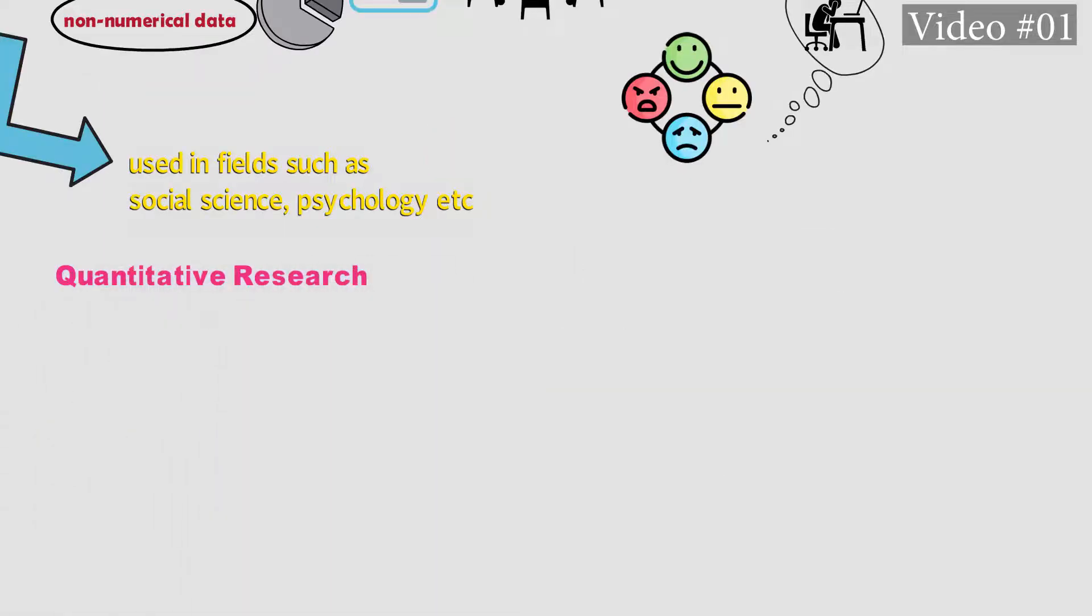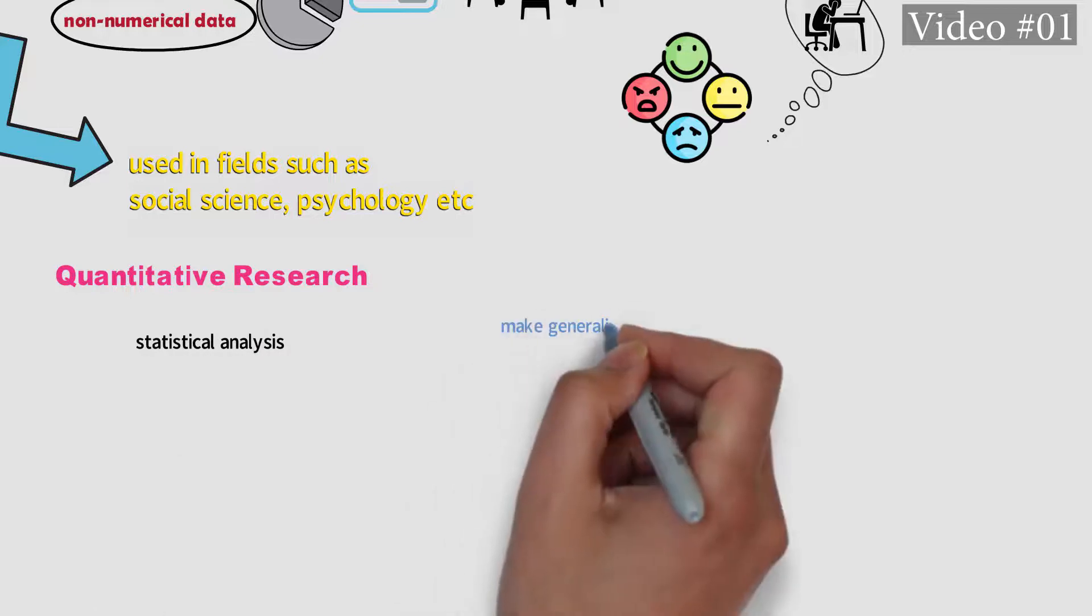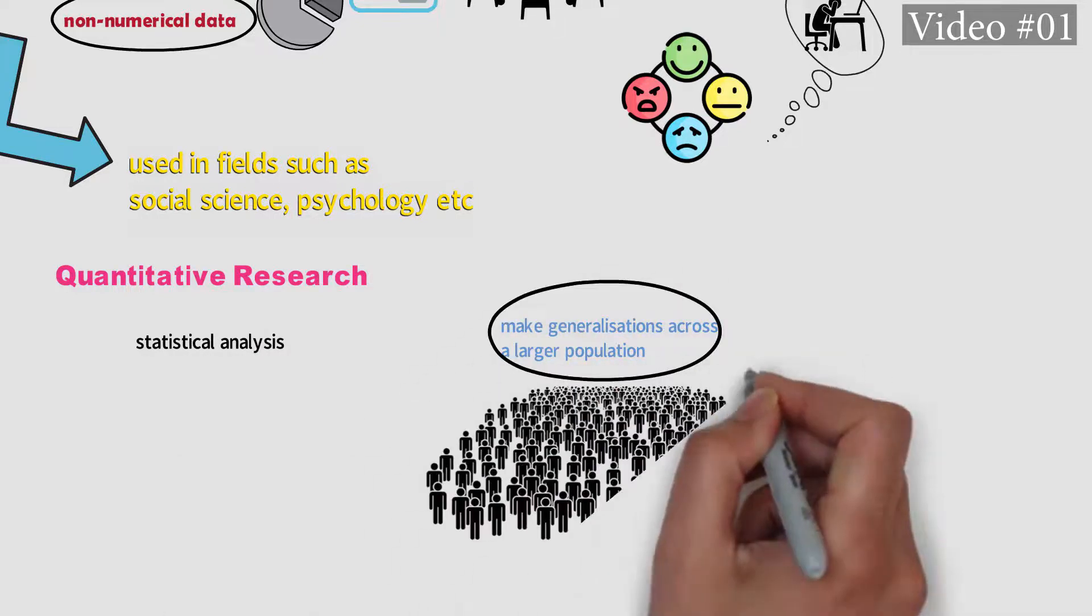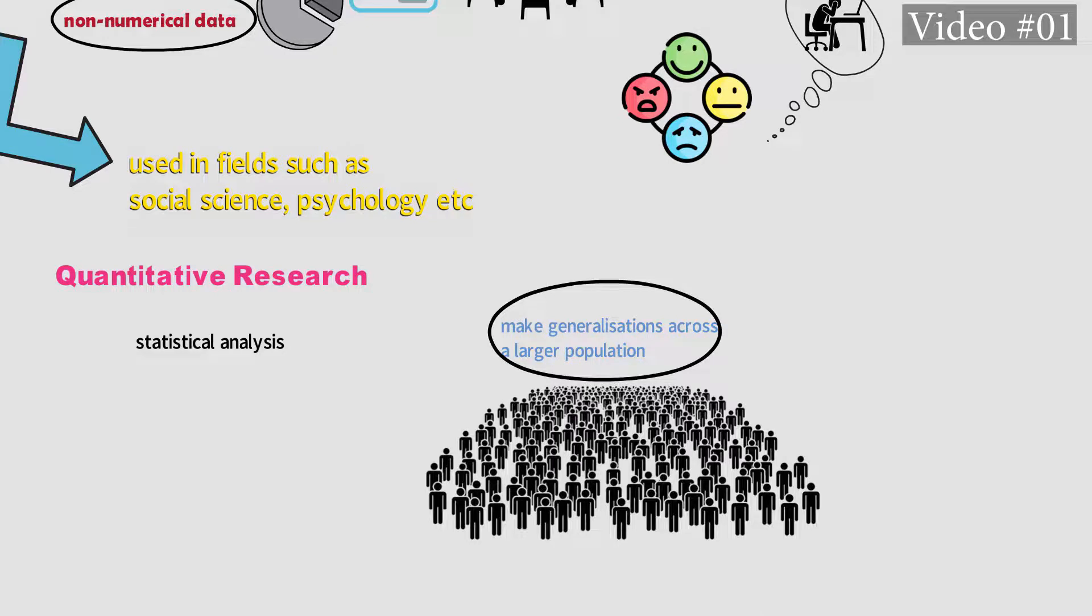Quantitative research is a method that collects and analyzes numerical data through statistical analysis. It allows us to quantify variables, uncover relationships, and make generalizations across a larger population.